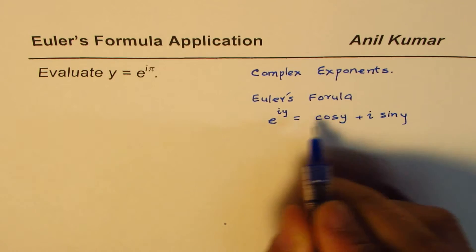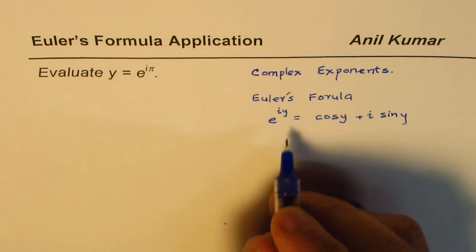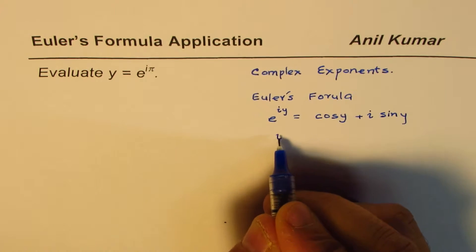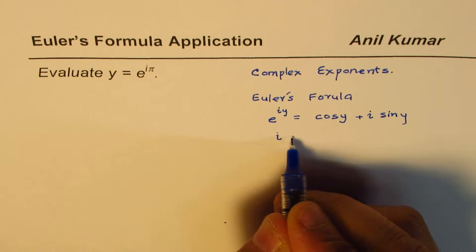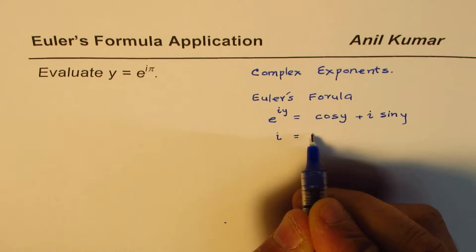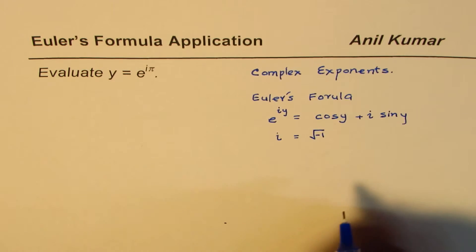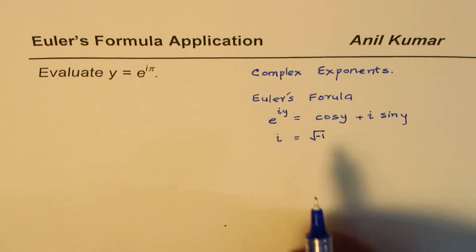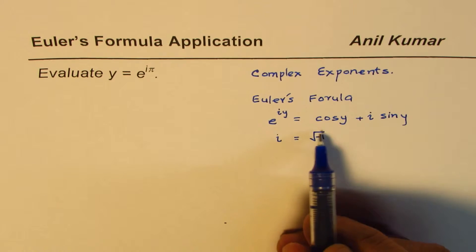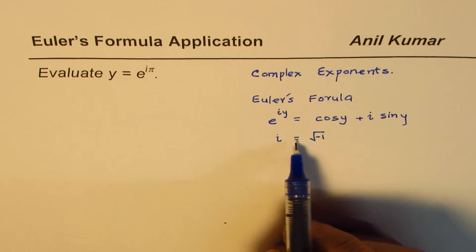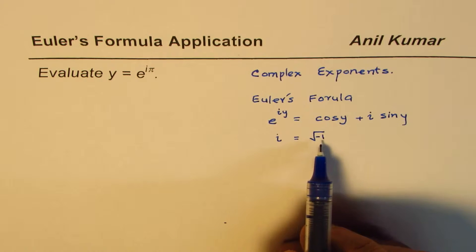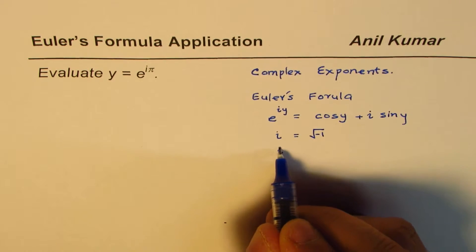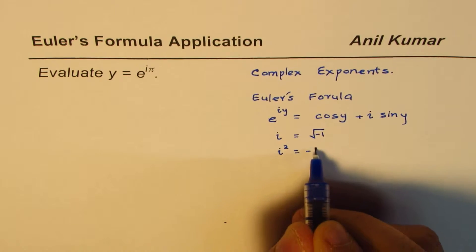Now, in this formula, this i, which I'm saying complex exponent, i is the imaginary part, which is basically equals to square root of minus 1. Most of the time we have been talking about real numbers. In that domain, there is no solution for such a thing. So we move on to the complex numbers domain where i is equal to square root of minus 1, or you can say i square is negative 1.